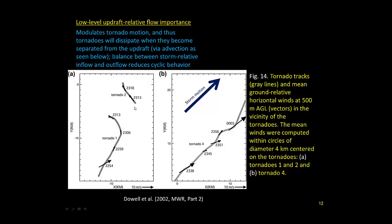Shortly after tornado one, tornado two developed, but the low-level mean wind was again carrying it to the northwest, so it didn't last very long and dissipated. Tornado four was larger and much longer lasting. They found that perhaps because of a surge in the rear flank gust front or downdraft, it actually led to more of a northeast mean wind, which kept that tornado going along a track that matched the storm motion. They stress the importance of this low-level updraft relative flow, which unfortunately we can't measure unless we have Vortex on every storm in our county warning areas.